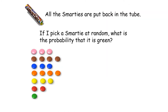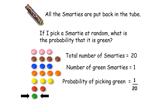I'm going to put all my Smarties back in the tube and pick one at random. What's the probability that it's green? The number of favourable outcomes over the total number of outcomes: there is 1 green Smartie out of 20 total. The probability of getting a green is 1 in 20. Interestingly, this is the same as asking what fraction of my Smarties are green - probability is the same as fraction.